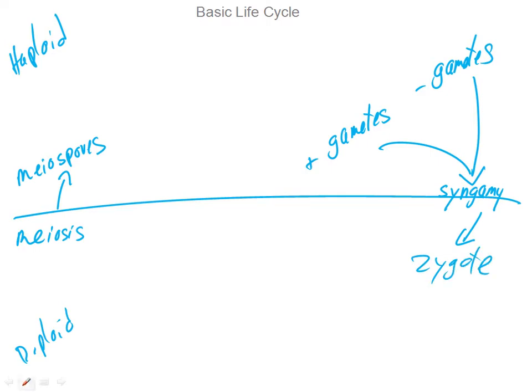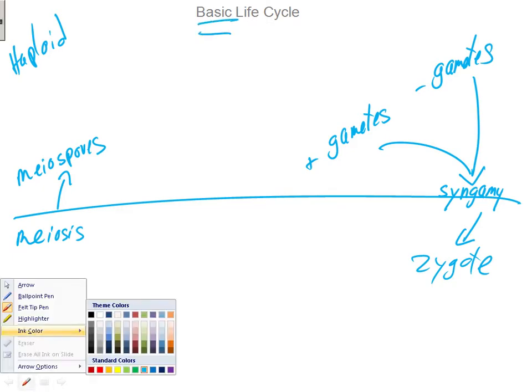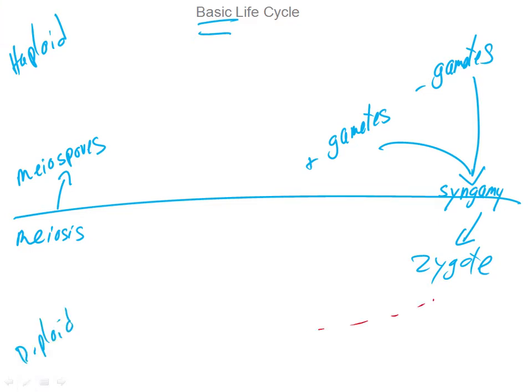Those are the most basic parts of the life cycle. From the zygote to meiosis, and from the meiospores to produce the gametes, different things happen depending on the specific organism. The life cycle I drew for you last time is a typical life cycle of a higher plant, but it's not a typical life cycle of algae. So let's look at our first real life cycle that we're going to encounter in the algae.